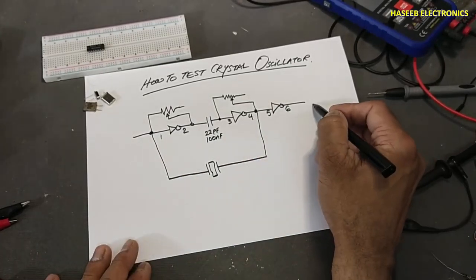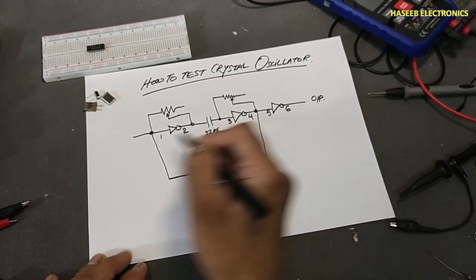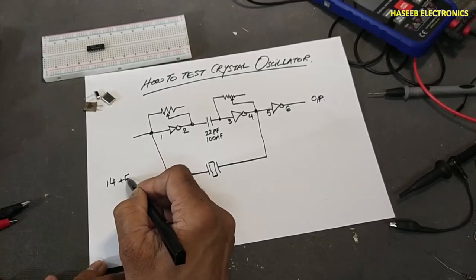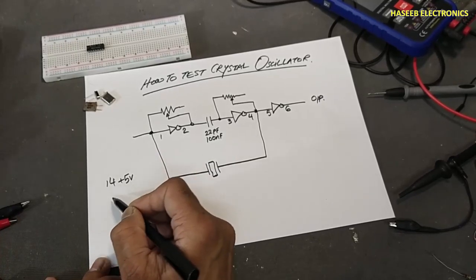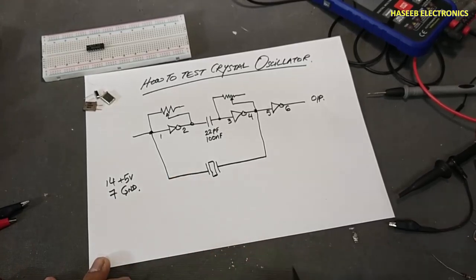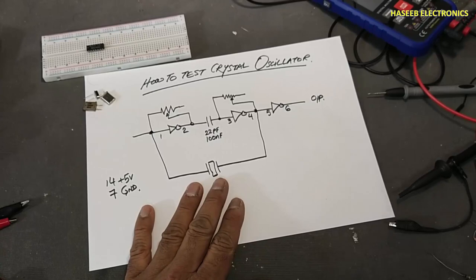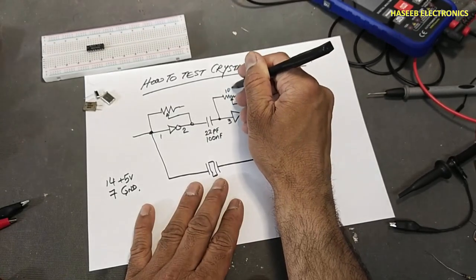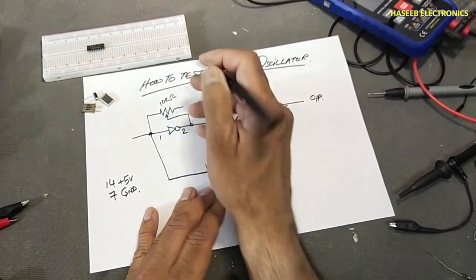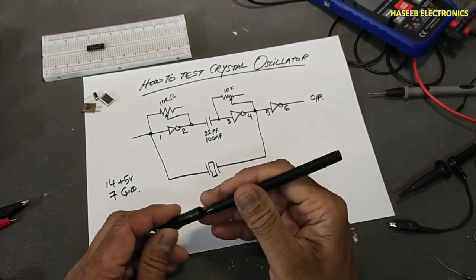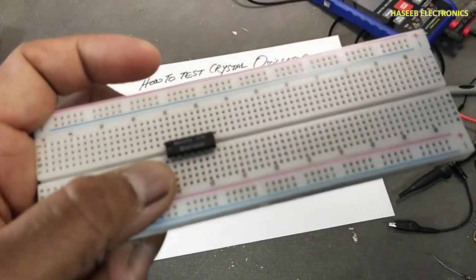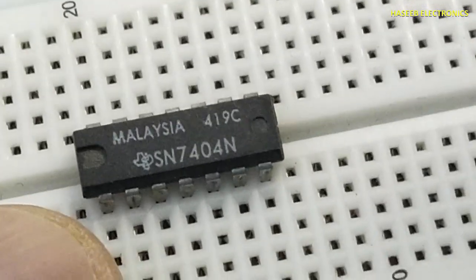The output is on pin number 6. Pin 14 is VCC at plus 5 volts and pin 7 is ground. This is our test circuit. We will use a 10 kilohm stereo potentiometer, a dual potentiometer, and the 7404 IC (also called 5404 IC or 74LS04).